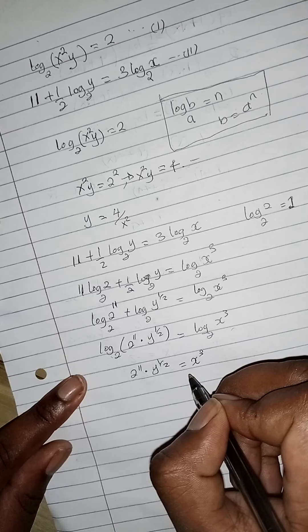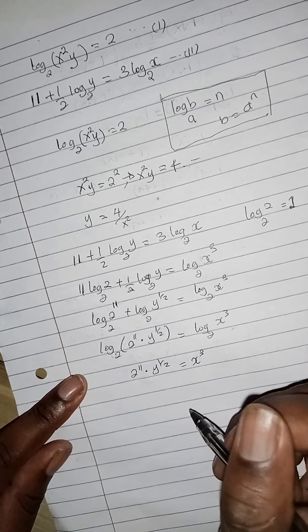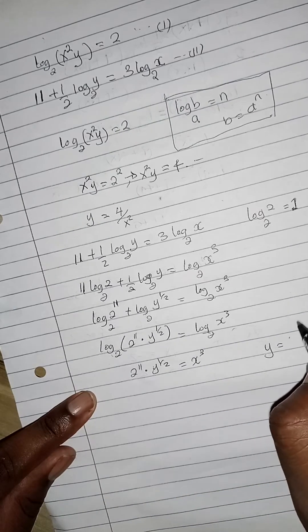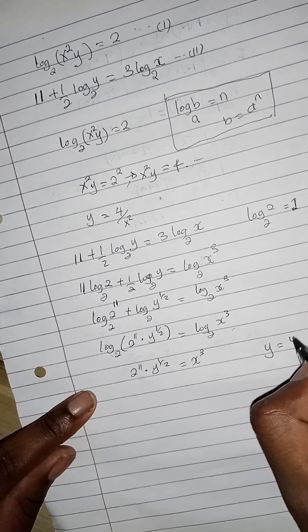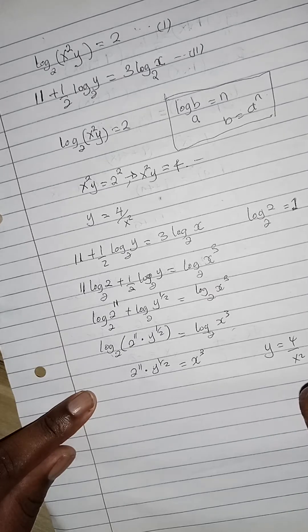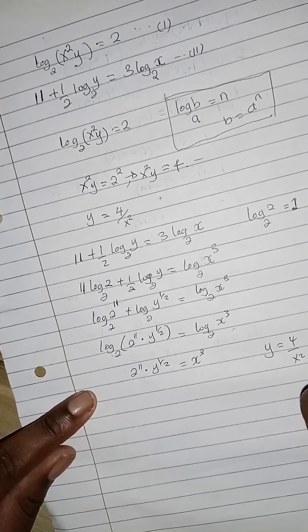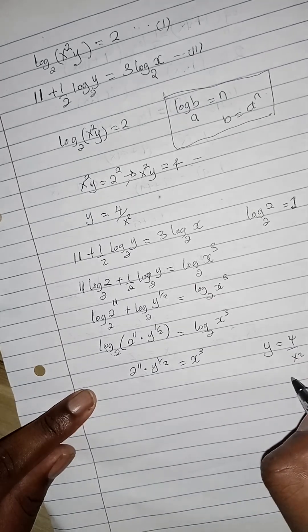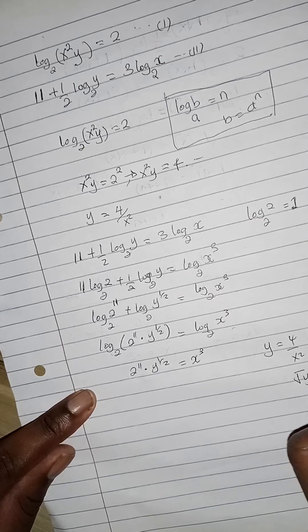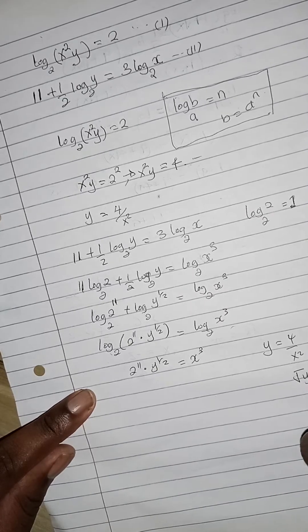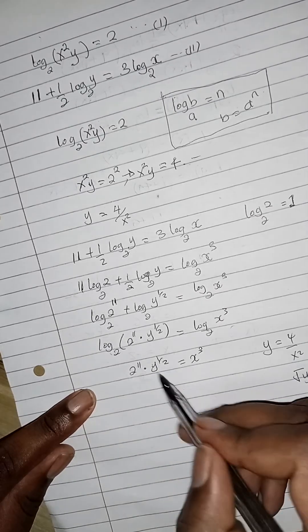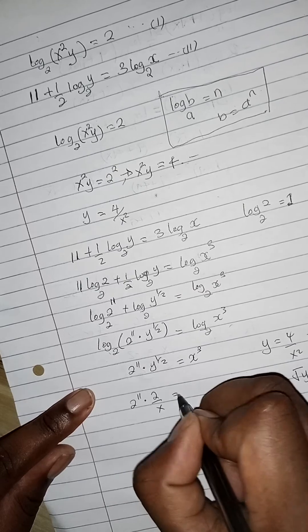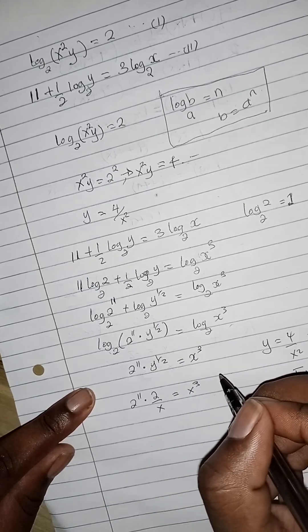We can substitute our y back. We said y is 4 over x squared, which is 2 squared over x squared. So the square root of y will be 2 over x. We substitute it here: we'll get 2 raised to 11 multiplied by 2 over x equals x cubed.